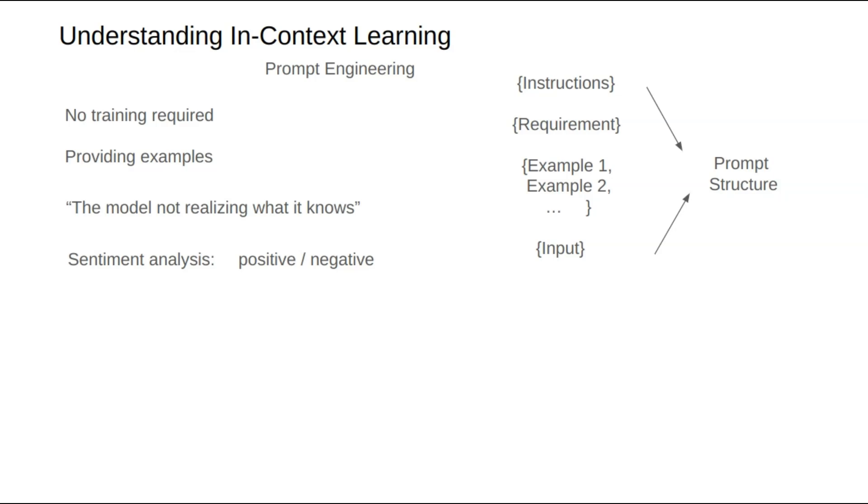Fourth, the question—the actual task or query for the model, referencing the examples to generate the answer. If no examples are provided, this is called zero-shot learning. If a few examples are given, it's known as few-shot learning.